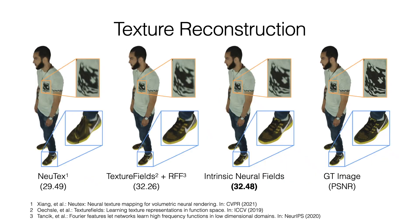First, we test intrinsic neural fields for texture reconstruction. The texture is reconstructed from posed views and rendered into novel views for evaluation. Our intrinsic neural fields can reconstruct texture with high quality and fine details. The performance is slightly better than that of a well-tuned and enhanced version of texture fields.